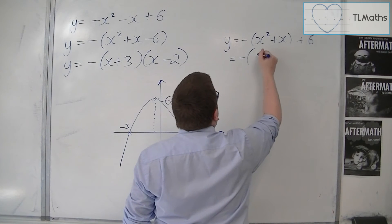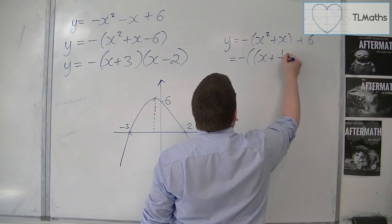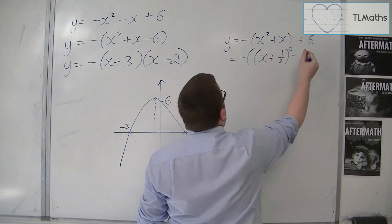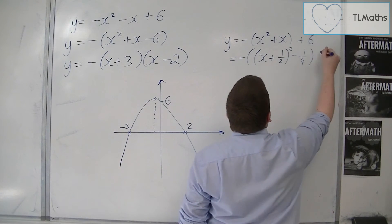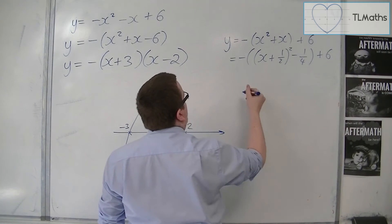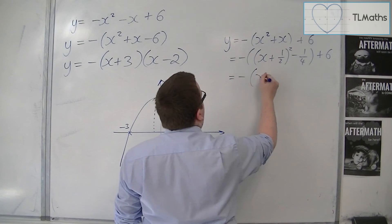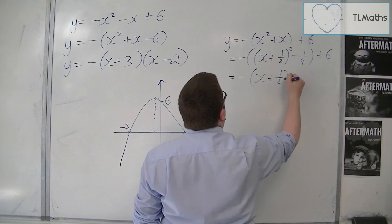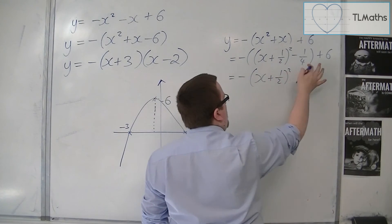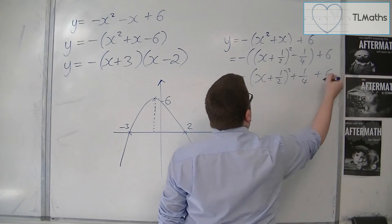Now you can then complete the square on what is inside that bracket. So minus x plus a half squared, take away a half squared, so a quarter, then have the plus 6 on the end. So we've got minus x plus one half squared, minus minus a quarter, so plus a quarter, plus 6.